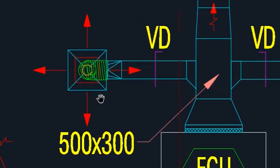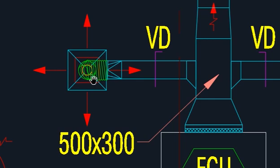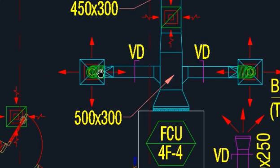Whenever you have to provide diffuser grills or whatever, you have to connect with a flexible duct. The flexible duct, as per standard, must not exceed 1.2 meters. If it is more than 1.2 meters, or 1.5 meters, this is not acceptable. So 1.2 meters is very good and sufficient.